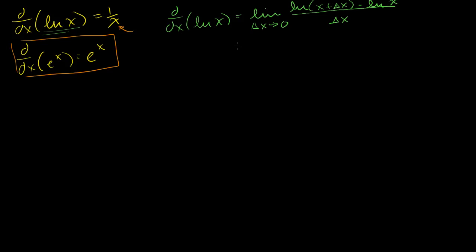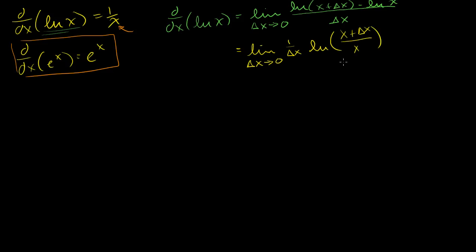So this is going to be equal to the limit as delta x approaches 0. I can take this 1 over delta x right here — 1 over delta x — times the natural log of x plus delta x divided by x. Just doing the logarithm properties right there. And then I can rewrite this: when I have a coefficient in front of a logarithm, I can make it the exponent.